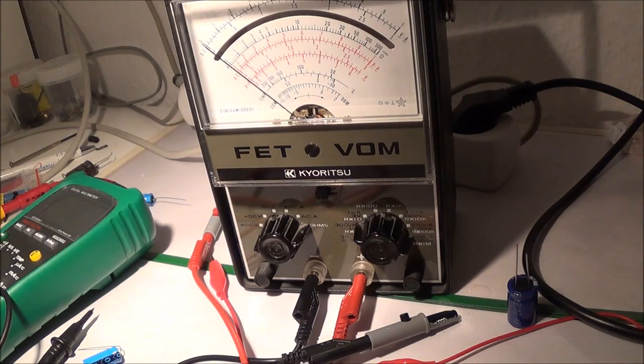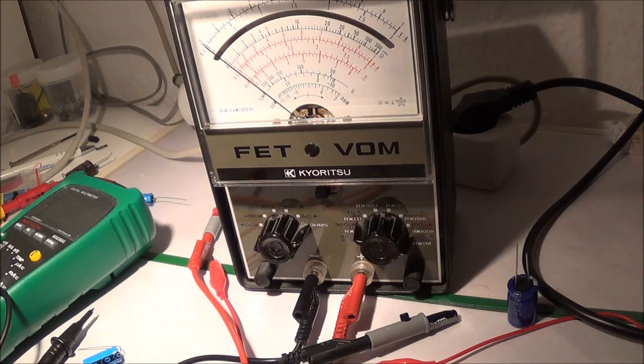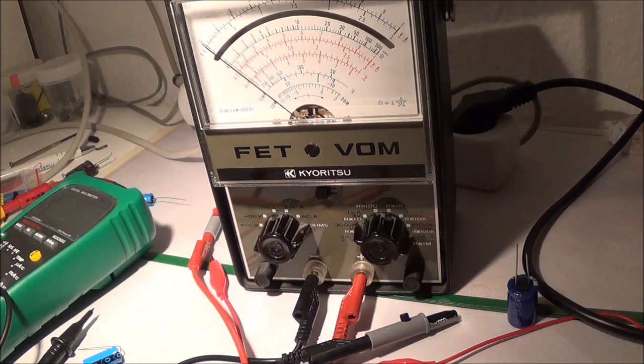Today I'm going to talk about testing electrolytic capacitors with an analog meter. This is going to be like a quick and dirty test. What this test is going to show, it's going to basically indicate if the capacitor has a short, is open, or has excessive leakage.